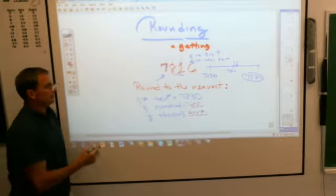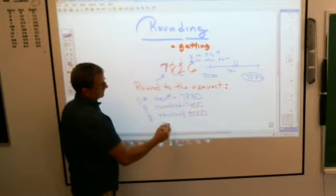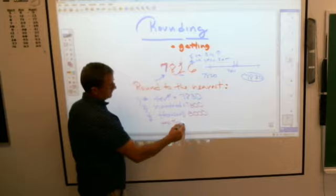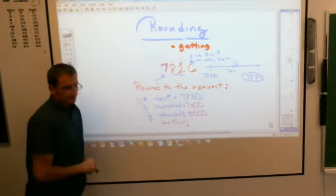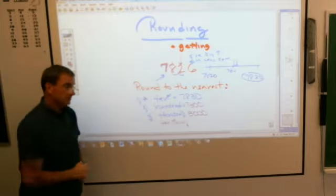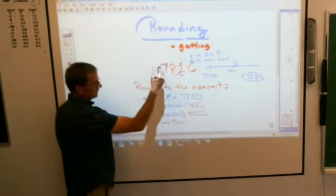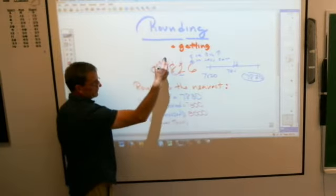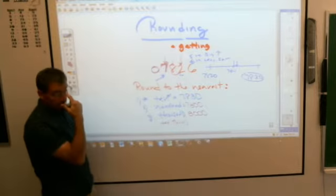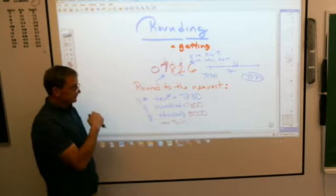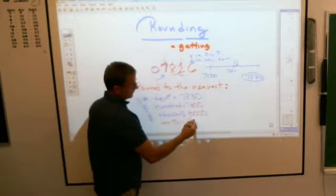What if I'm rounding that to the nearest 10,000? What digits in the 10,000s place? Well, I don't have them, but it would be a 0 if I did. If I look to the number next to it, what would that be rounded to the nearest 10,000s? Sam? 10,000. It would be 10,000.